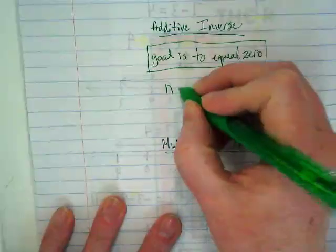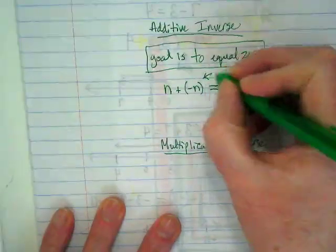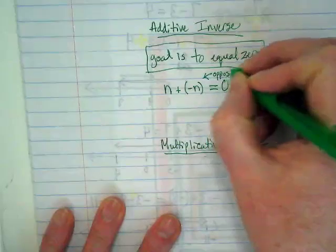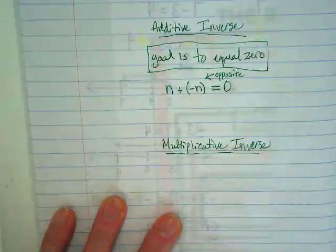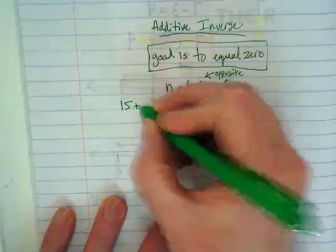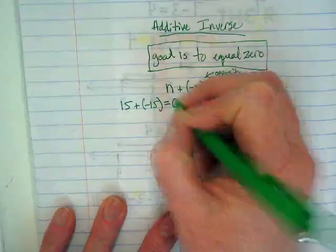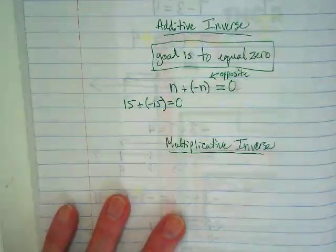the thing to add to it is its opposite. So if I have 15, I would add a negative 15 because we always want this to equal zero when we're working with additive inverse.